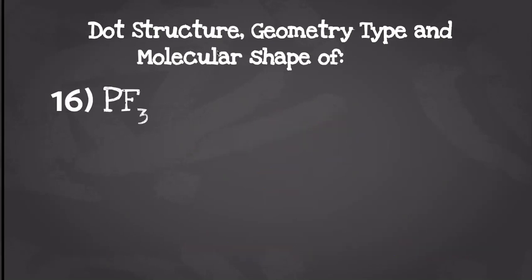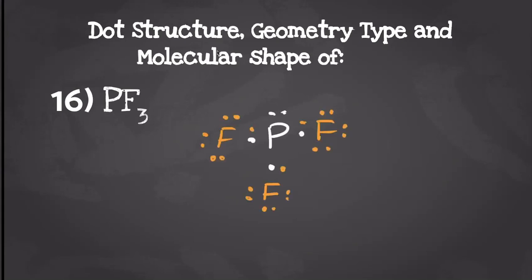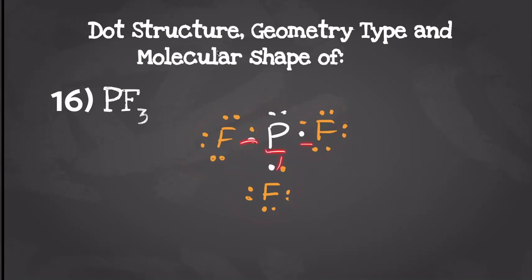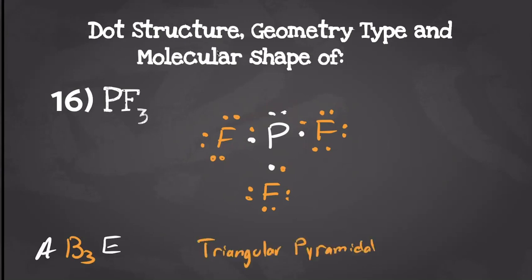Next up we have phosphorus trifluoride. Phosphorus is going to have five valence electrons and each fluorine is going to have seven, so when we draw our dot structures it should look something like this. Phosphorus is going to have eight valence electrons and each fluorine is going to have eight as well. We have one center atom attached to three other atoms, and we can't forget the lone pair. That's going to give us a geometry type of AB3E, which gives us a molecular shape of trigonal pyramidal. Our lone pair here is going to overpower the electronegativity of all of the fluorines, so it's going to give us a polar molecule with our dipole moment being up.